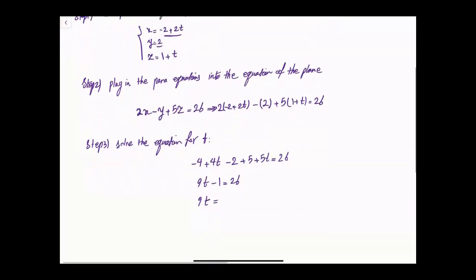This is 9t and this is -1 equal to 26. So 9t = 26 + 1 which is 27, and t = 27/9 = 3.